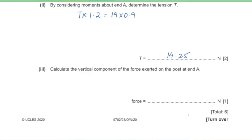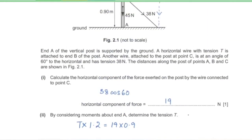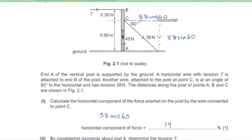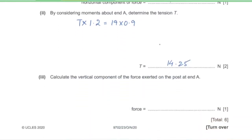Part 3: Calculate the vertical component of the force exerted on the post at A. Since the post is in equilibrium, the vertical upward force at A equals the sum of all downward vertical forces: the post's weight of 45 newtons plus 38 sin 60. This force also acts downwards, giving a total of 78 newtons.